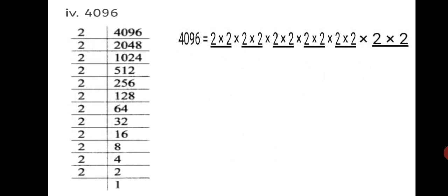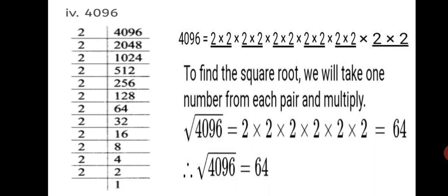Fourth sum: find the square root of 4096. It is an even number, divisible by 2. We keep dividing by 2 and get 12 factors of 2 altogether, forming 6 pairs. To find the square root, we take one number from each pair and multiply. The square root of 4096 equals 2 into 2 into 2 into 2 into 2 into 2, which gives 64.